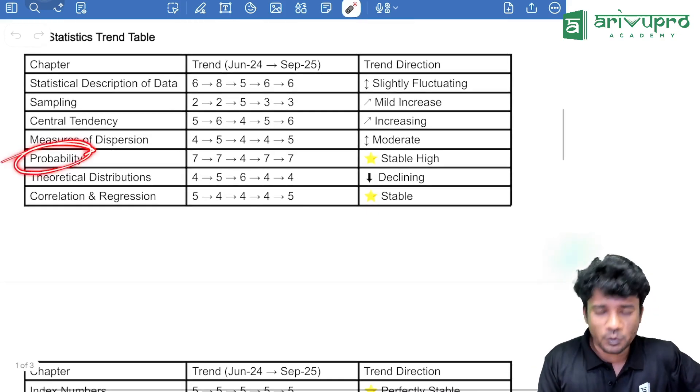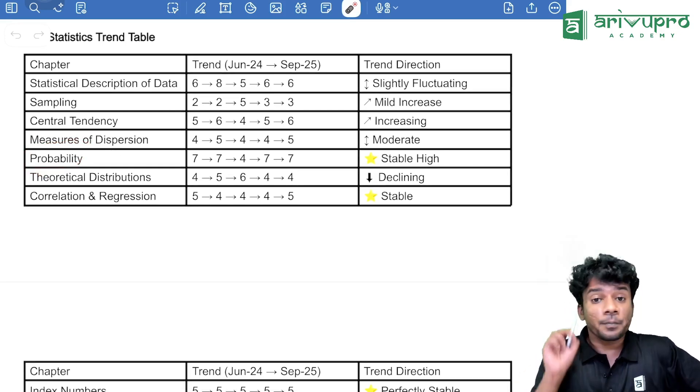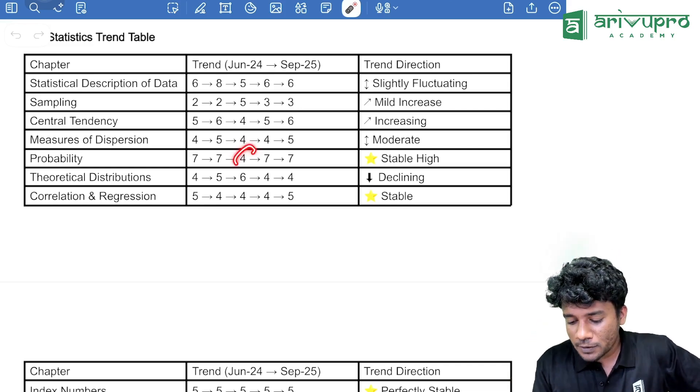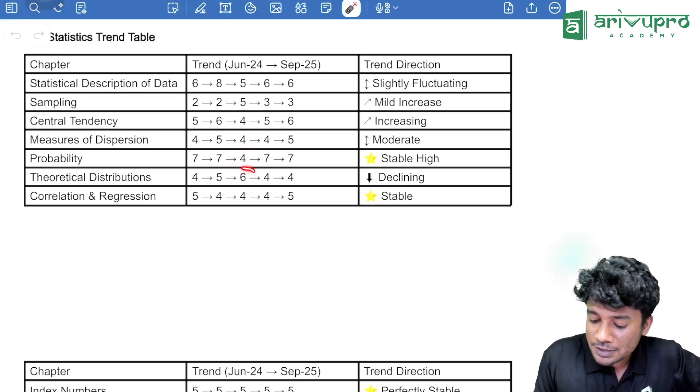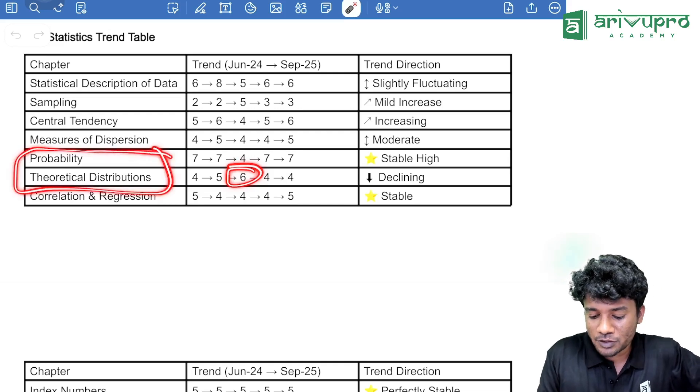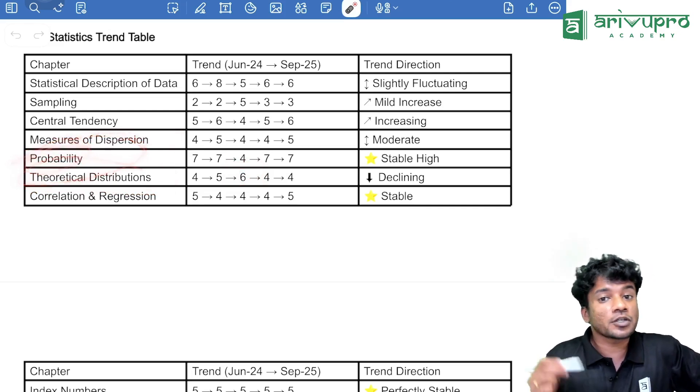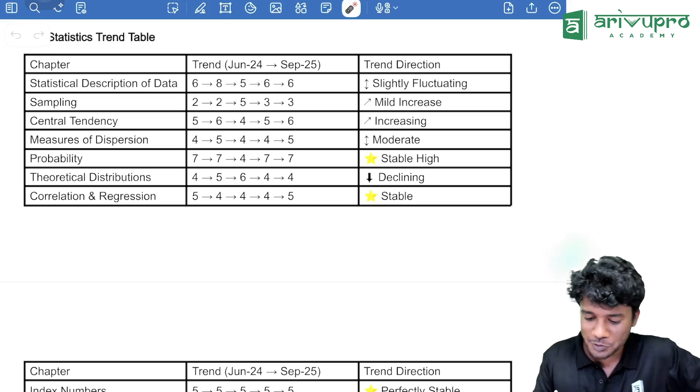Then, coming to the most stable one, that is probability. Probability usually gives you 7 marks and the major important part with respect to probability is, if you look here, if the marks in probability decline, automatically the marks in theoretical distribution will increase because the usual trend is the probability and theoretical distribution together will give you 12 marks. That is the trend of probability and theoretical distribution.